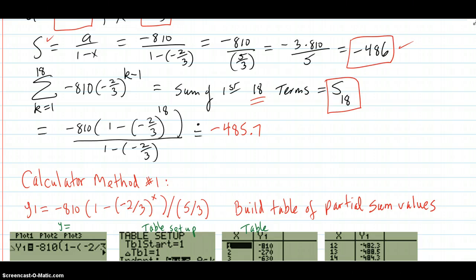So I've written it in summation notation, the original series, and stopped it at the 18th term. So you can see that negative 2 thirds is the constant ratio hitting on the negative 810 each time.